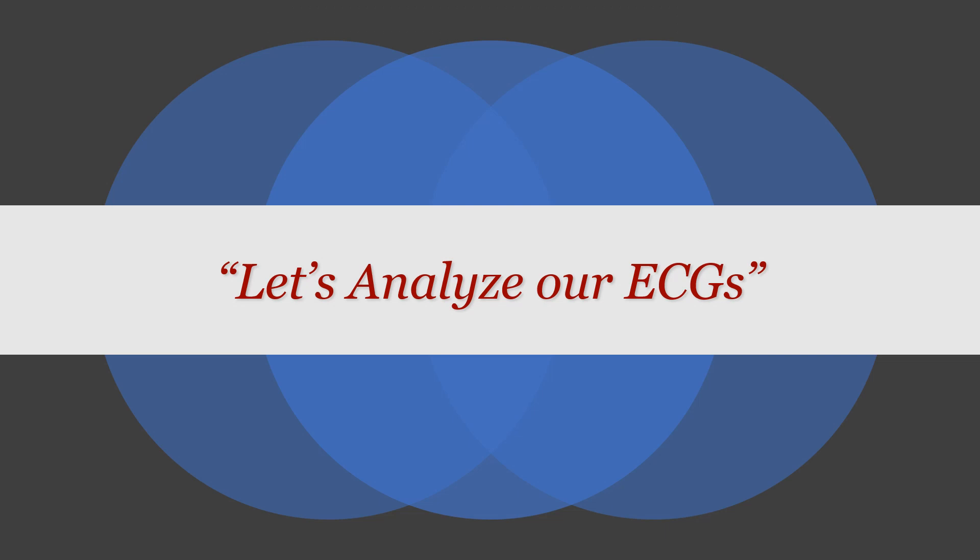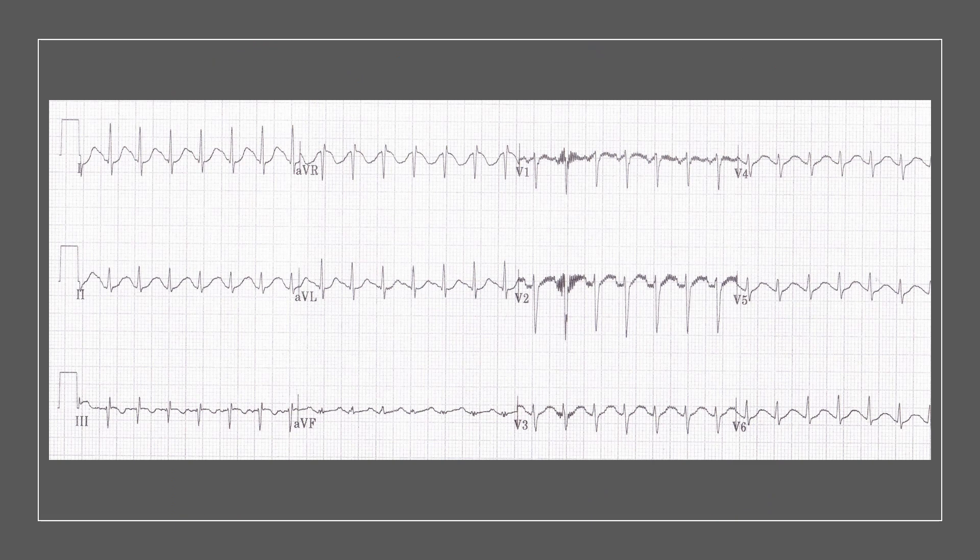Let's analyze our ECG following this approach. Checking the first three questions about the complex — rate, rhythm, and width — the rate is clearly fast, about 170, so we've got tachycardia. The rhythm looks very regular. And the width: this is a narrow complex. So we have a narrow complex regular tachycardia.